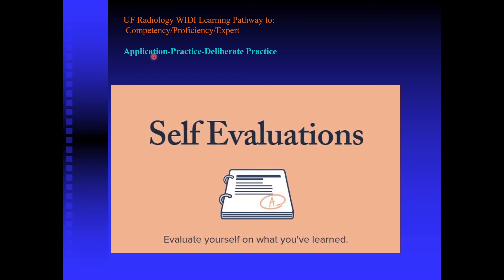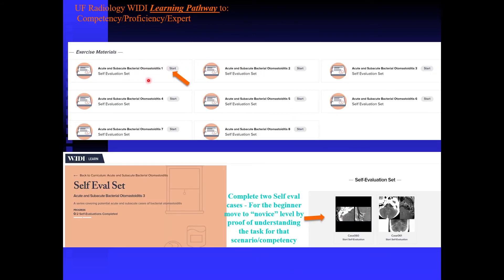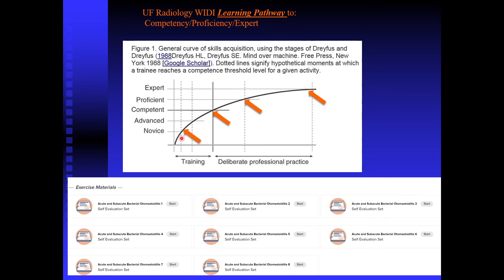That's the initial experience. Then we say: now we've given you this introduction and familiarized you with our tools — now we're going to give you a bunch of cases to practice on your own. You can see there's a whole menu of cases inside this clinical scenario of acute otomastoiditis with or without complications. You can choose a case. We ask people to complete at least two to get to the novice level. You can choose all of the cases one at a time. In order to move up this curve, you have to do this deliberate practice — and we provide that opportunity.